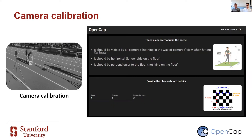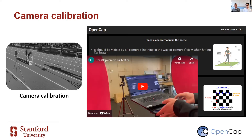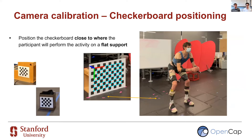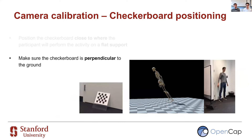After setting up your cameras and optimizing your environment, you will be prompted on the web application to calibrate the cameras using a checkerboard. Please watch the tutorial video dedicated to camera calibration on our website. Make sure you position the checkerboard close to where the participant will perform the activity — the further away, the less accurate the data may be. Also make sure the checkerboard is mounted to a flat surface like a plexiglass sheet, and that it is perpendicular to the floor.